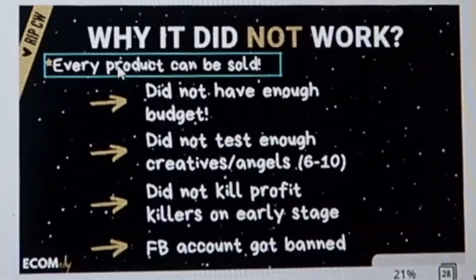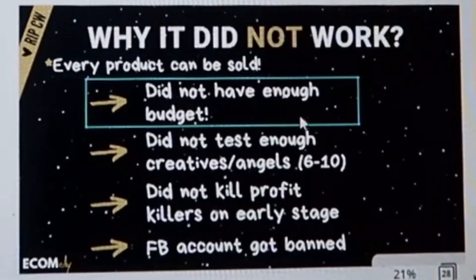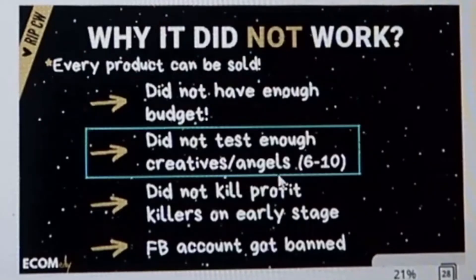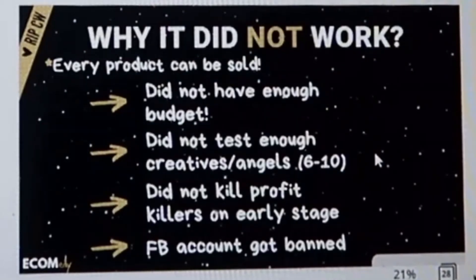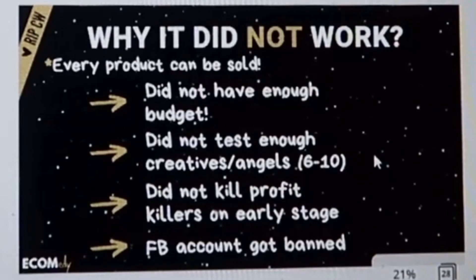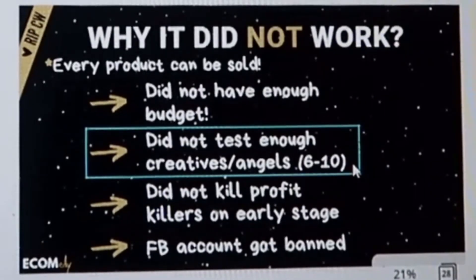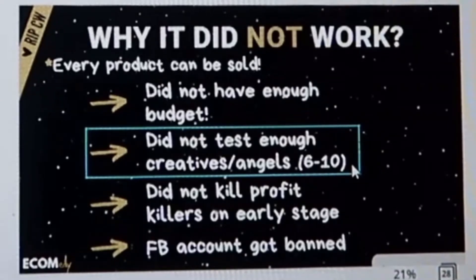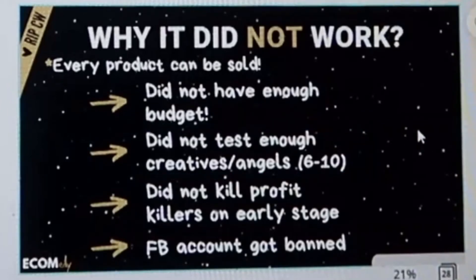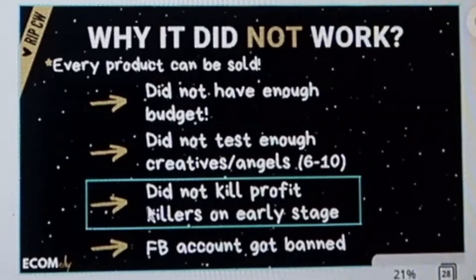If the percentage from add-to-cart to initiate checkout is less than 50%, it's a price issue. Every product can be sold — maybe you didn't have enough budget, or you didn't test enough creative angles. Right now I test from 6 to 10 angles before deciding if I can make it work. Before, I used to test one angle and one video, and if it didn't work I thought the product was bad. But it was my marketing that was bad. Also, it didn't work because you didn't kill profit killers early on — when you start to scale and increase budget, you tend to spend more on campaigns that don't work.